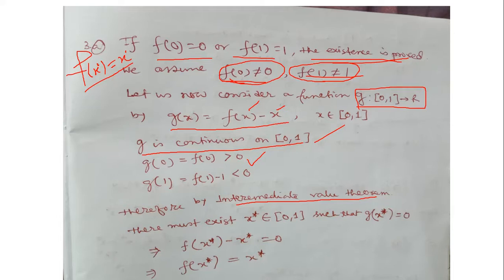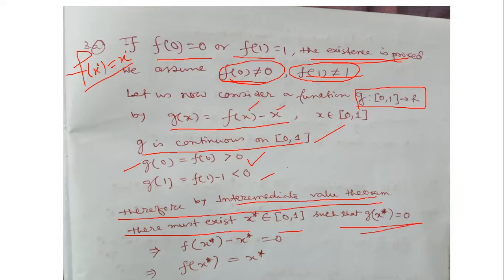By the Intermediate Value Theorem — since g is continuous on [0,1] with g(0) > 0 and g(1) < 0 — there exists x* belonging to [0,1] such that g(x*) = 0. This means f(x*) − x* = 0, so f(x*) = x*. Therefore, there always exists x* such that f(x*) = x*. This completes the first part.